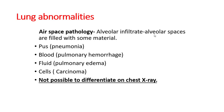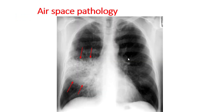Air space pathology — the most important alveolar infiltrate — occurs when alveolar spaces are filled with material: bacteria or pus in pneumonia, blood in pulmonary hemorrhage, fluid in pulmonary edema, or cells in cancer. These cannot usually be differentiated on chest X-ray.